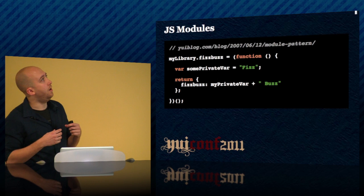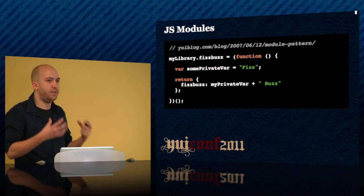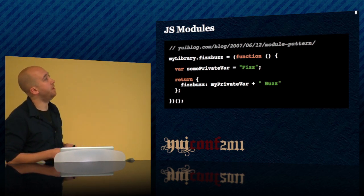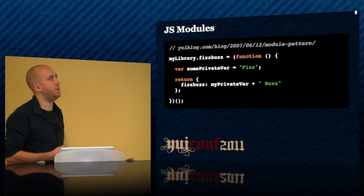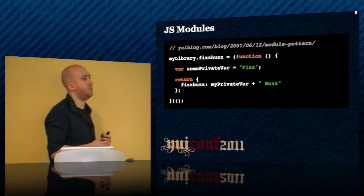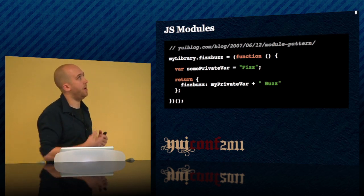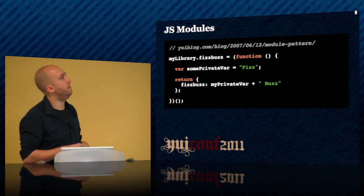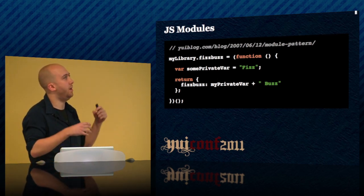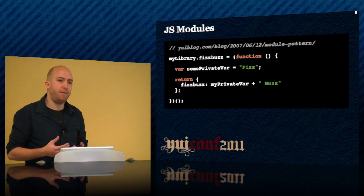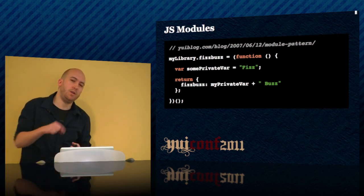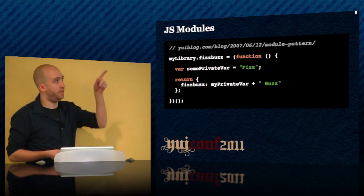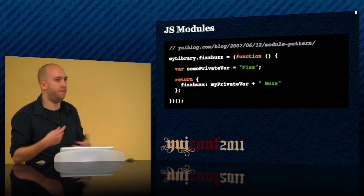This is a way to essentially construct a library in a modular architecture. We start with 'my library' — whatever you're going to call your library — and then assign a name to your API method, and wrap a function. Inside of that, you can create whatever private variables and methods you want to, and what you actually return is your object. That's what you expose to the outside world — your public variables and methods.